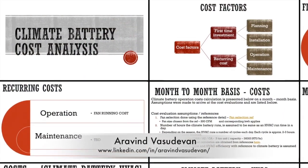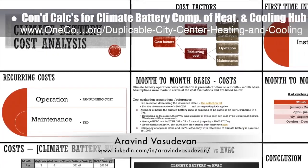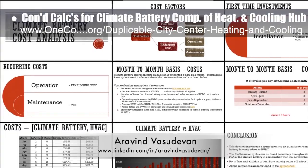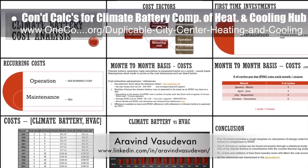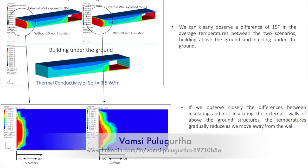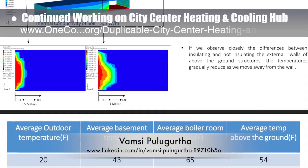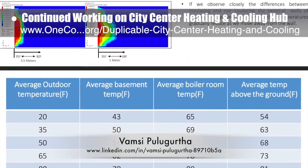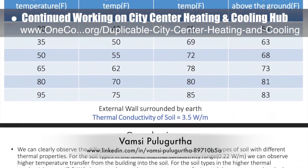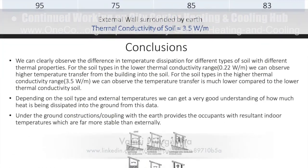Erevan Vasudevan, mechanical engineer, continued his calculations and research for the climate battery component of the city center heating and cooling open source hub. This week's focus was creation of the initial presentation structure, evolving into the complete design, as shown here. Vamsi Polargertha, mechanical engineer, also continued work on the basement heat transfer comparisons for the city center heating and cooling open source hub. Shown here are Vamsi's newest details and conclusions comparing how heat transfers from the basement and boiler room to the outside when built in-ground versus above ground.